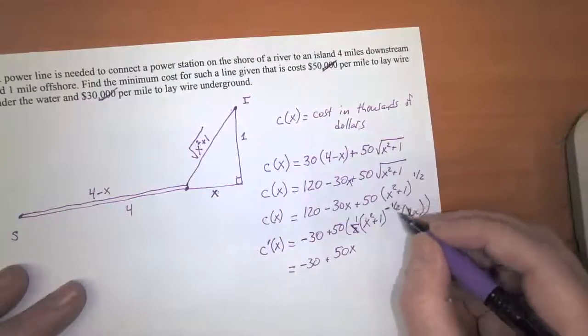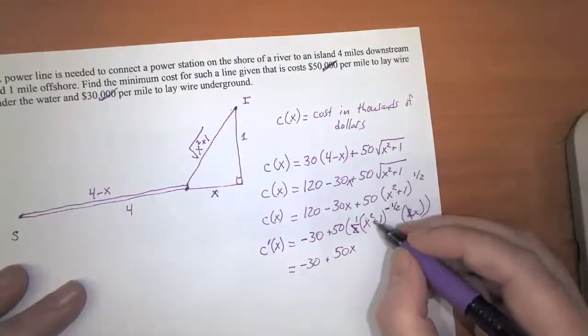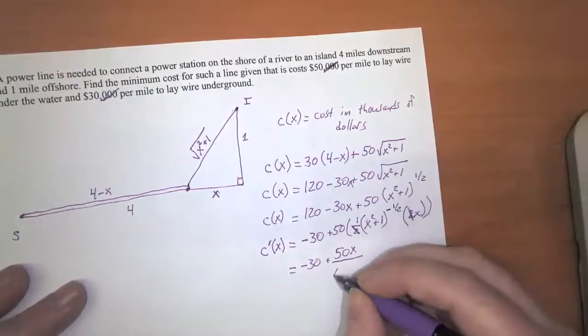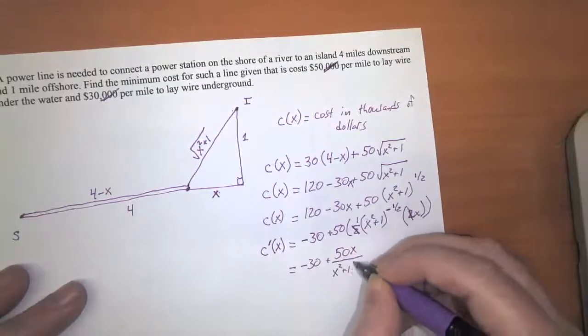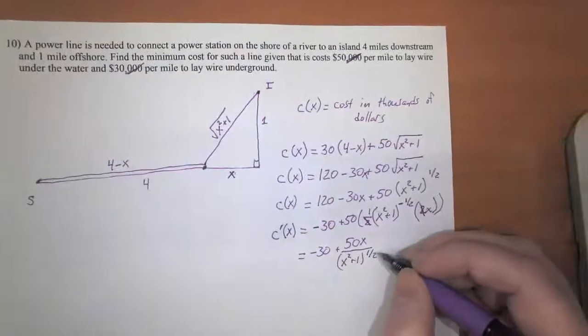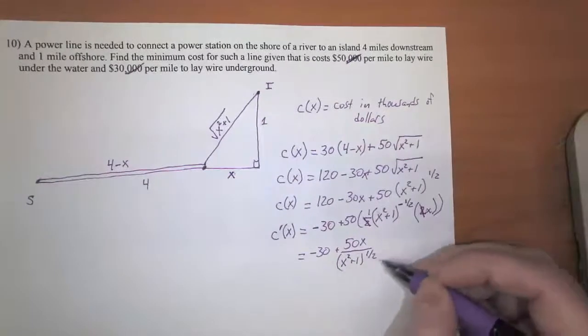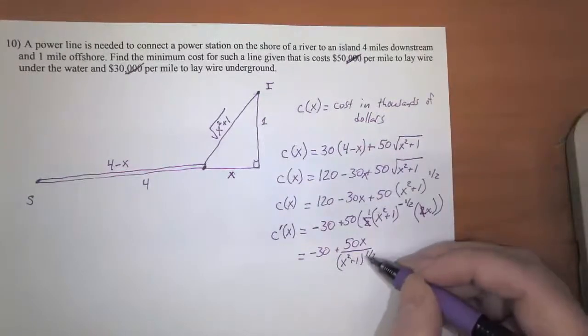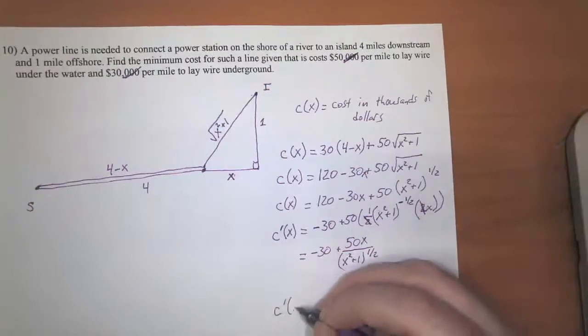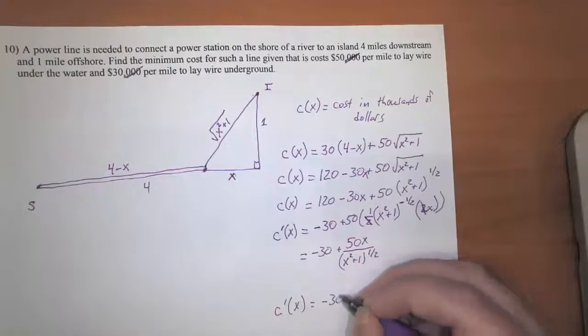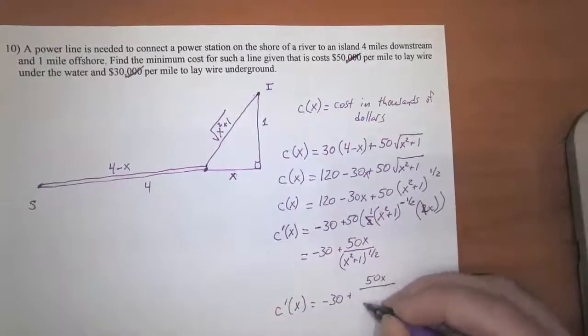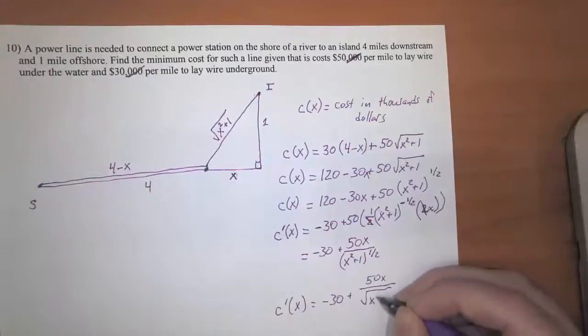We've got a negative exponent here. How can we turn that into a positive exponent? Well, it'll be a positive exponent if we move it into the denominator, so that'll be (x squared plus one) to the one half power. And there's one more thing we can do to clean this up: we can turn this back into a square root notation. So we've got that c prime of x is equal to negative 30 plus 50x over the square root of (x squared plus one).